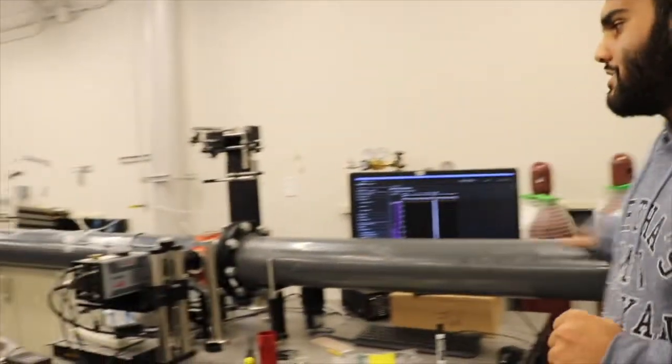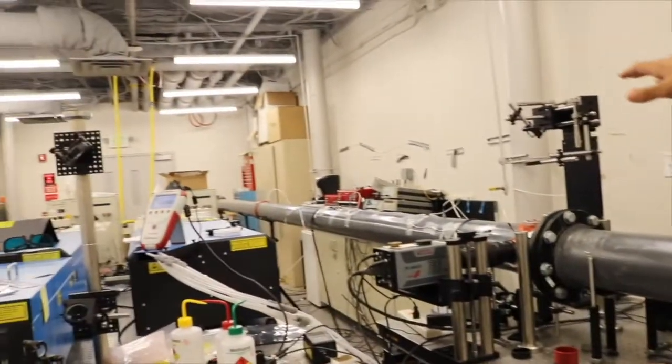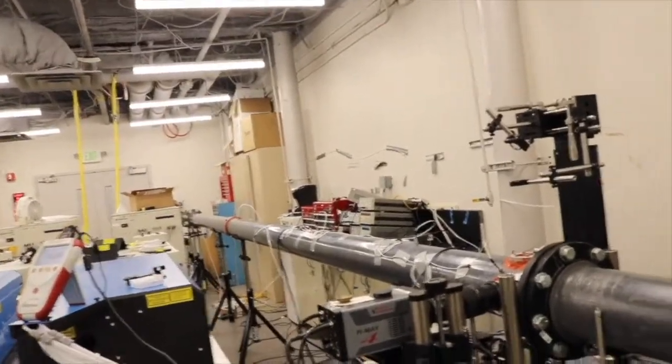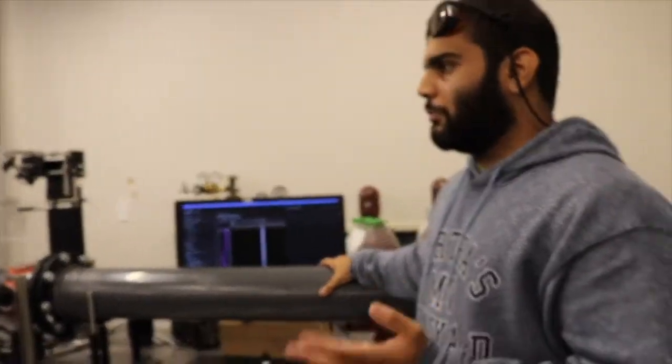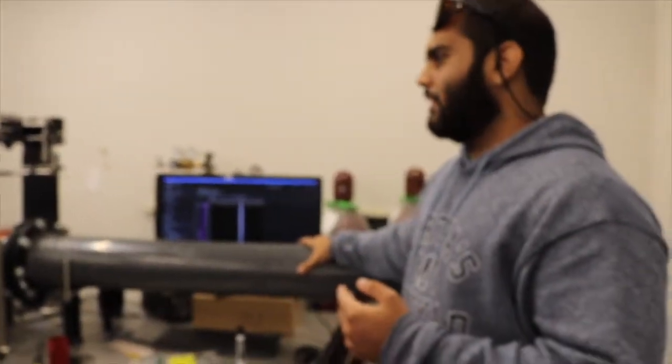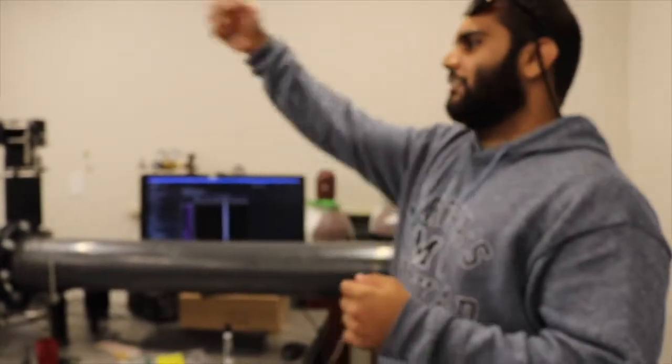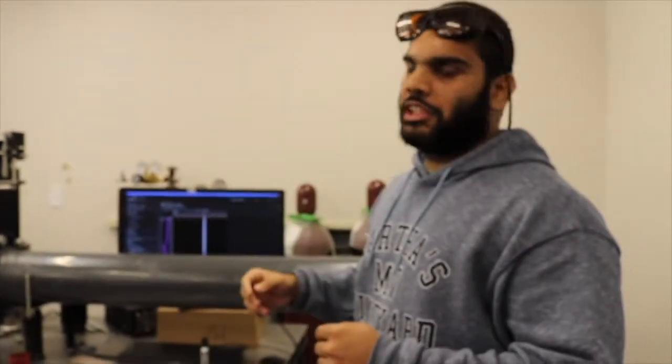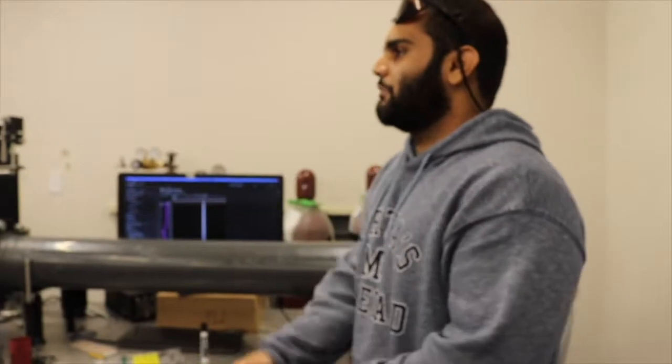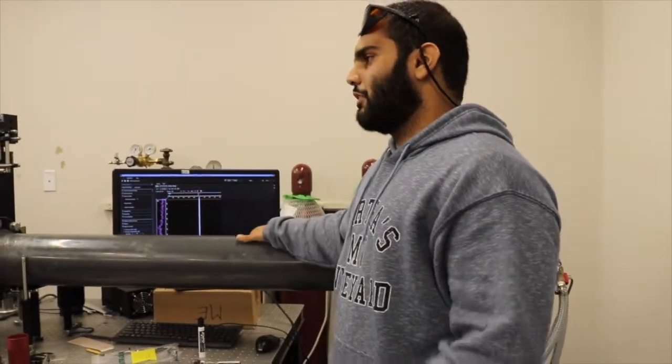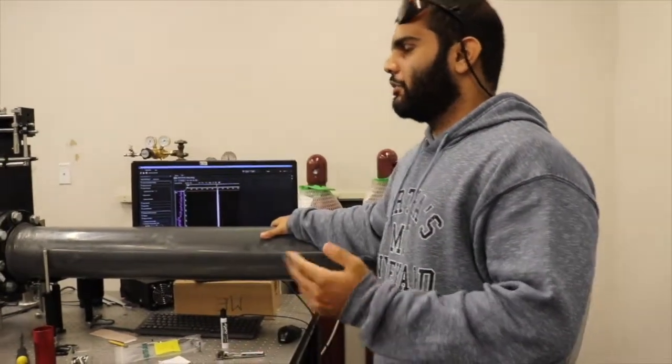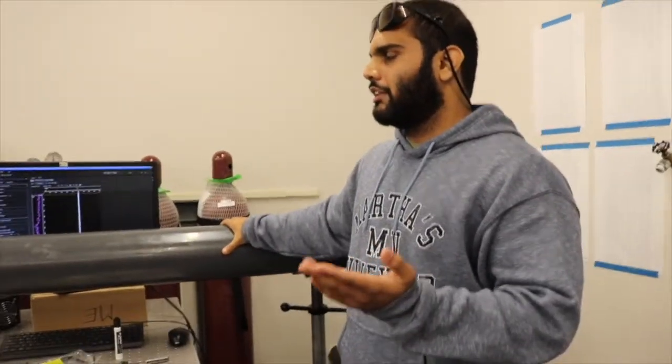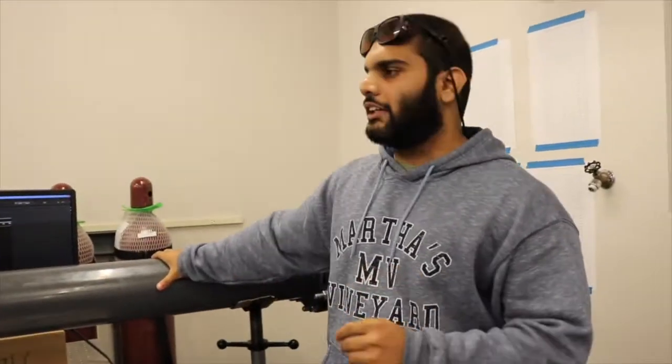This is the shock tube. It has two parts. This side is called the driven section. The one at the very end, which is kind of hard to see, that's called the driver section. The driven section is at low pressure, typically a thousandth of an atmosphere. The driver section is at one atmosphere currently. We can, of course, change it if you want to. But this creates a shock wave—if you do a thousandth of an atmosphere, we get a shock wave with a Mach number of three, roughly. And then we can study the flow behind it.